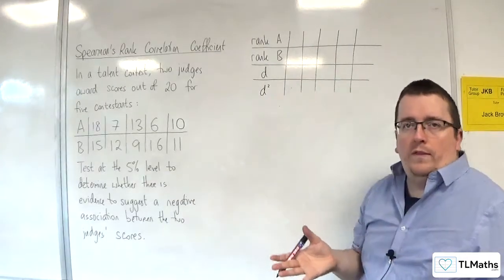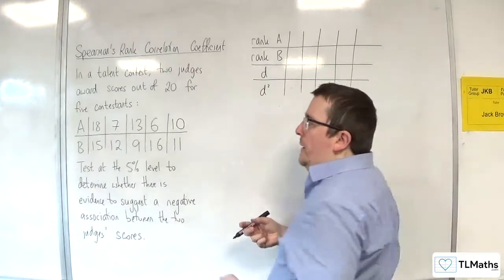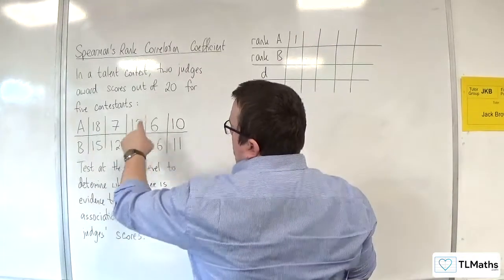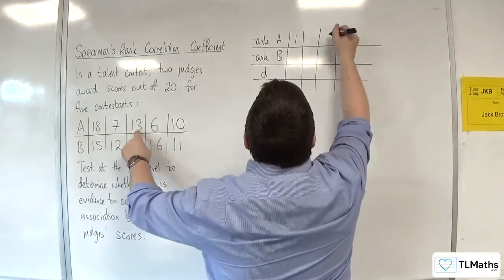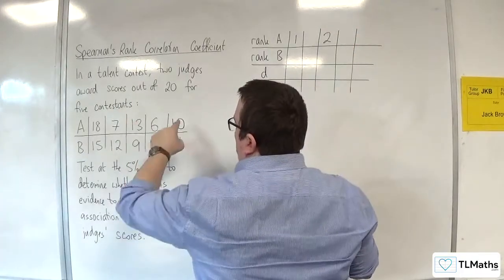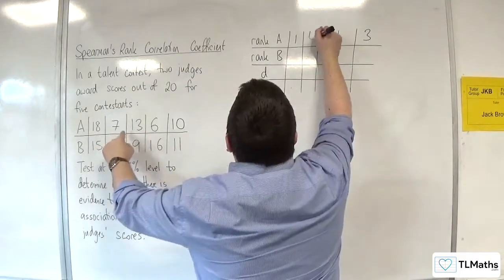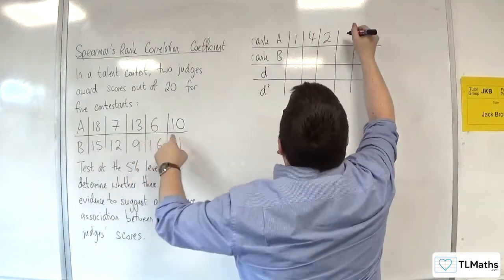So, we'll put the person with the highest scores first, shall we? So, 18 gets first. Then the 13 gets second. Then we've got the 10, which is going to be third. The 7 there is fourth, and the 6 is fifth.